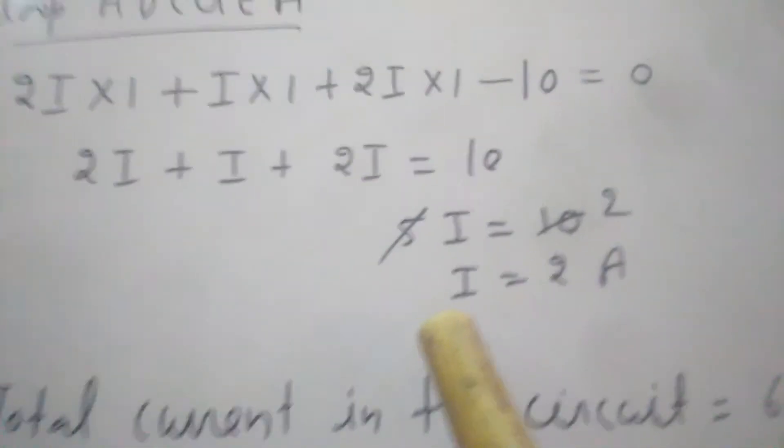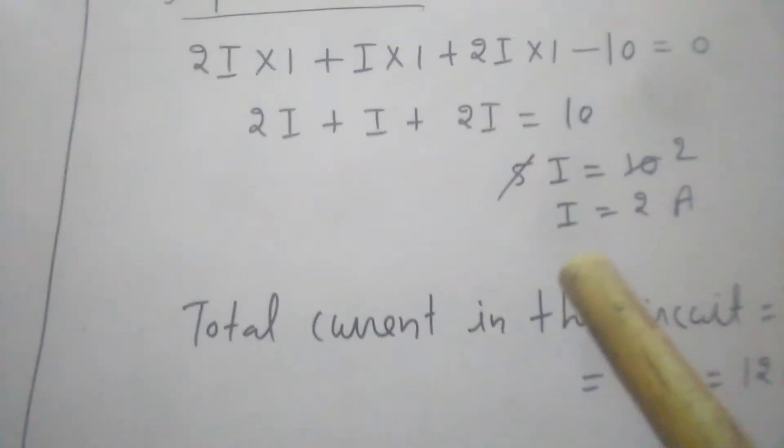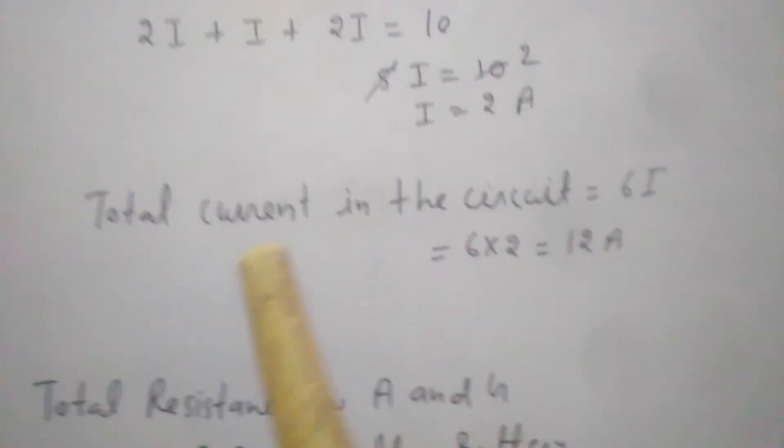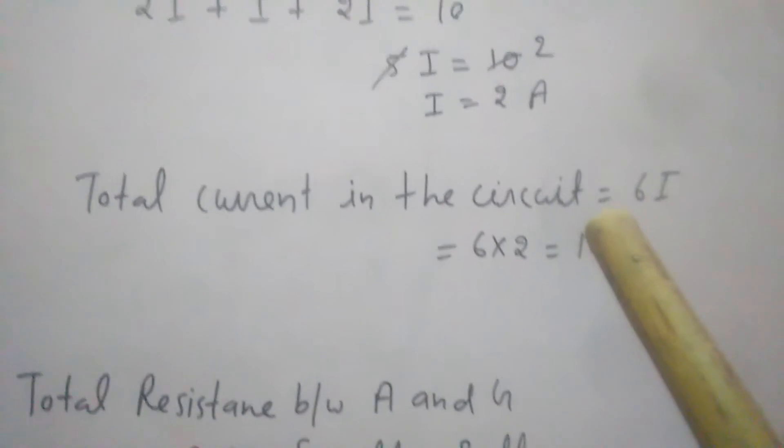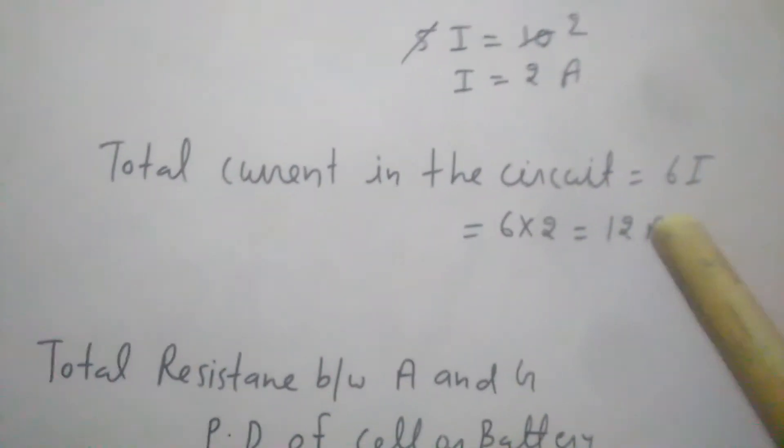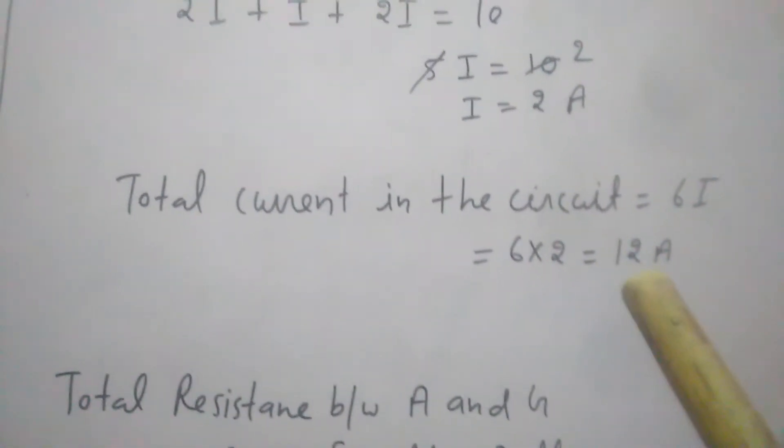Now total current in this circuit - the total current in the circuit was 6i, so 6 into 2, that is 12 ampere.